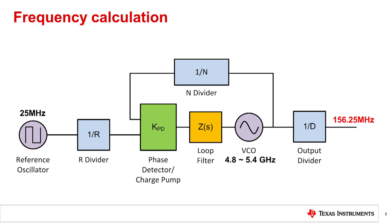The lower limit of the divider value is the minimum VCO frequency divided by output frequency. Or in this case, 4.8 GHz divided by 156.25 MHz, which is equal to 30.72. Similarly, the upper limit is 5.4 GHz divided by 156.25 MHz, which is equal to 34.56. The value D must be an integer, in this case, between the two values that we see. Therefore, the available divider values are 31, 32, 33, and 34.